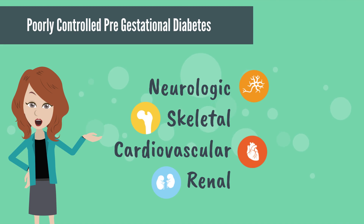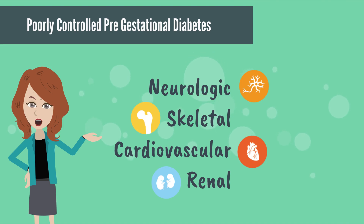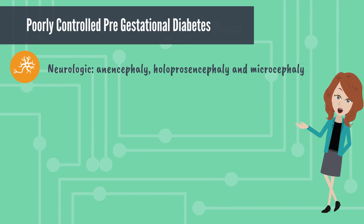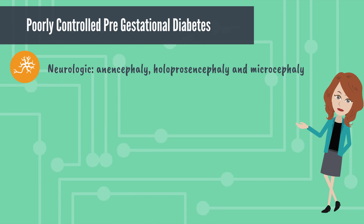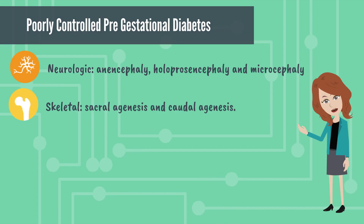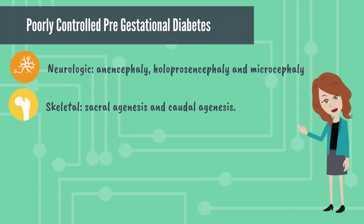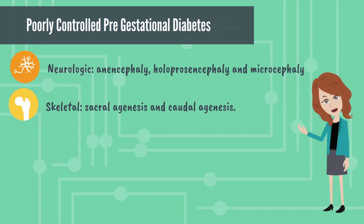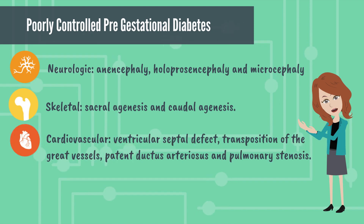These risks are mainly neurologic, skeletal, cardiovascular, and renal. Neurologic abnormalities include anencephaly, holoprosencephaly, and microencephaly. The most common skeletal abnormalities include sacral agenesis and caudal agenesis. There can also be a variety of cardiovascular abnormalities.